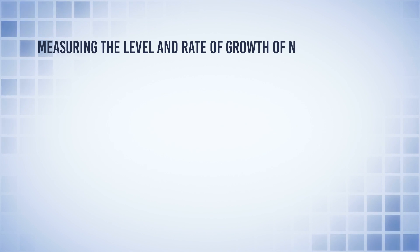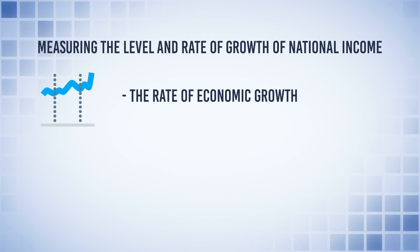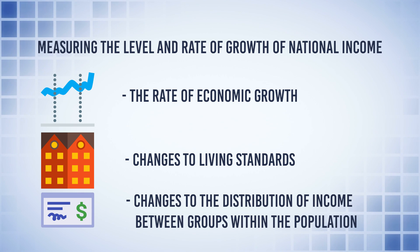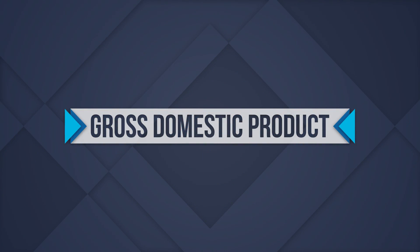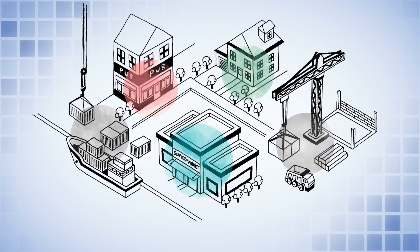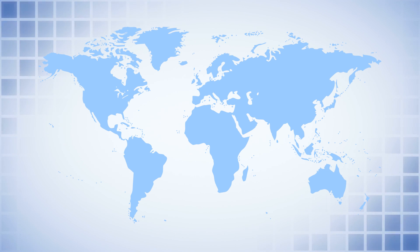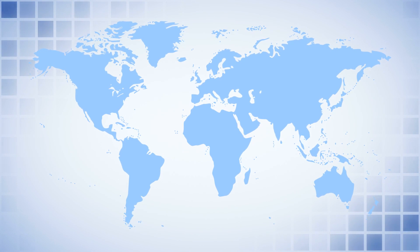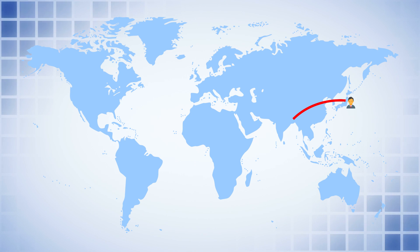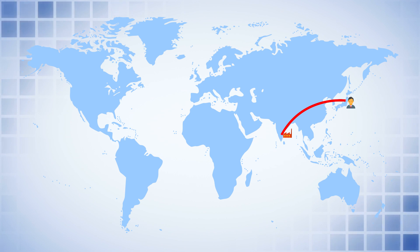Measuring the level and rate of growth of national income is important for keeping track of the rate of economic growth, changes to living standards, and changes to the distribution of income between groups within the population. The Gross Domestic Product is the total value of output produced in a given time period. GDP includes the output of foreign-owned businesses located in a nation following foreign direct investment. For example, the output produced at the Nissan car plant in Chennai contributes to India's GDP even though Nissan is not an Indian company.